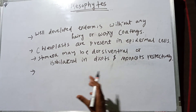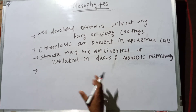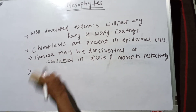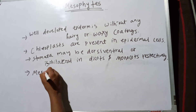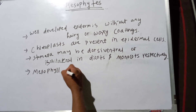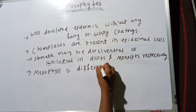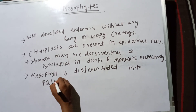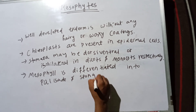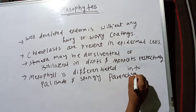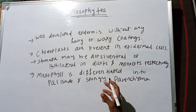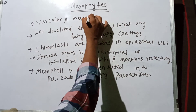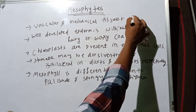The mesophyte leaf is differentiated into palisade and spongy parenchyma. Additionally, the vascular and mechanical tissues are well developed.